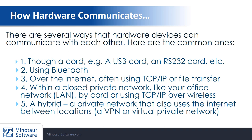Let's focus first on hardware. There are several ways that different hardware devices can communicate with each other. Some of the common ones — the very first kind — are through a cord: a USB cord or an RS-232, which is a serial cord, connecting two pieces of equipment so they can talk. Another more recent type of communication between hardware devices is Bluetooth, and I'm going to talk more about what that is and what it isn't a little later on.